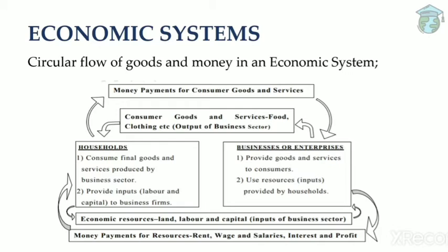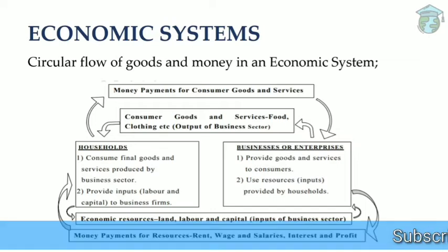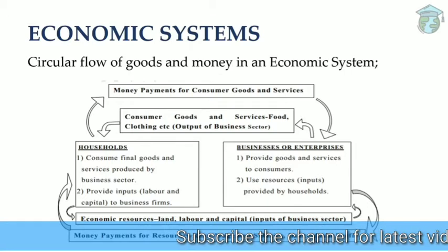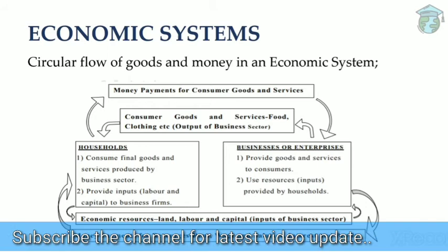For example, we buy groceries and give money to the store. The grocery store or industry uses that money to give wages to laborers, and again those laborers use their wages to consume goods. This is the circular flow from the household point of view. From the business or enterprise point of view, the main aim is to provide goods and services; customers buy them and in return give inputs — labor or capital — which businesses use to produce more goods.